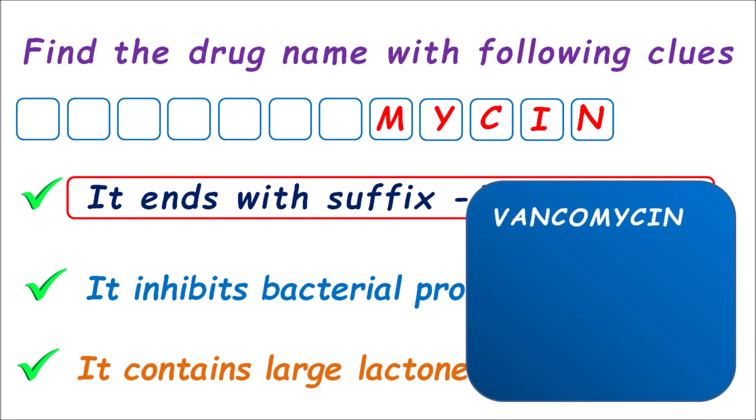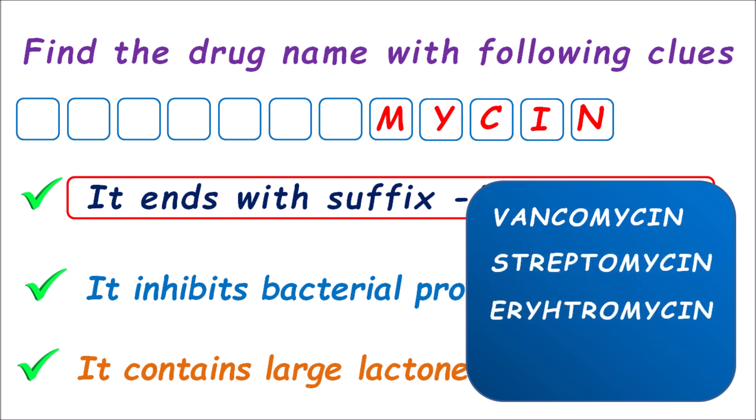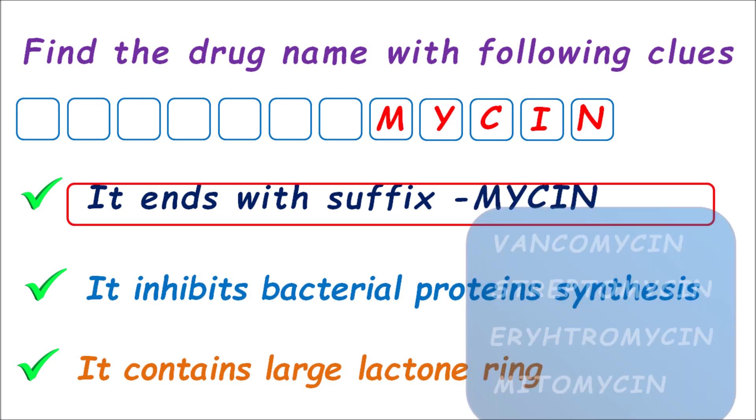The first one is vancomycin and related drugs, the second one is streptomycin, the third one is erythromycin, and the fourth one is mitomycin. All these drugs share the same suffix '-mycin.' In order to find the right answer, we have to go to the next clue — it inhibits bacterial protein synthesis.